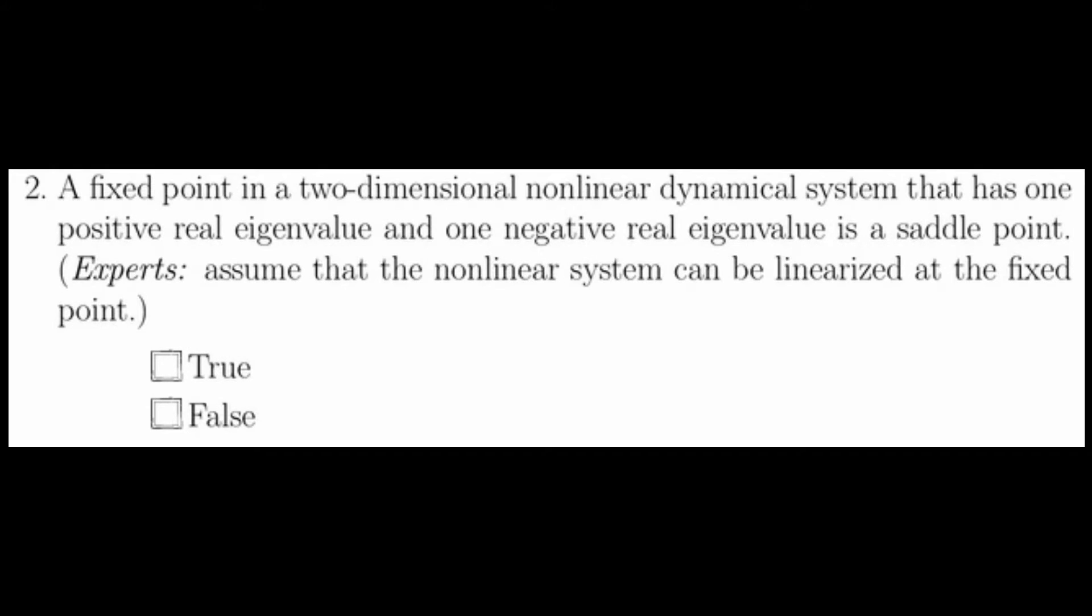The second question pretty much comes down to a definition as well. If we assume that the nonlinear system can be linearized about the fixed point, and that linearization has one positive and one negative real eigenvalue, then by definition this is a saddle point. The only thing that's a little bit weird here is making sure that the nonlinear system can be linearized at a fixed point.